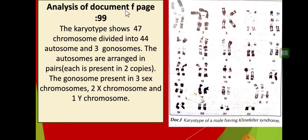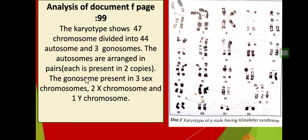Now analyzing document F for Klinefelter syndrome: the karyotype shows 47 chromosomes divided into 44 autosomes and three gonosomes. The autosomes are arranged in pairs, each present in two copies. The gonosomes are three sex chromosomes: two X chromosomes and one Y chromosome. This is how we write the analysis for this karyotype.